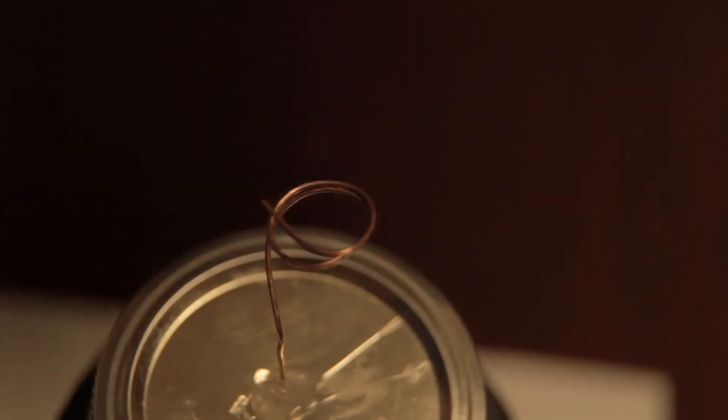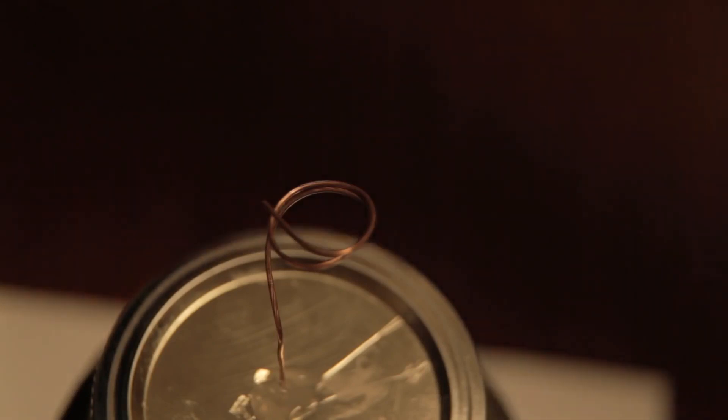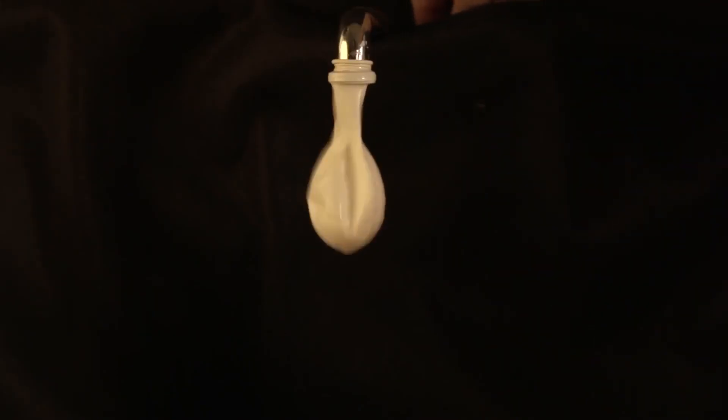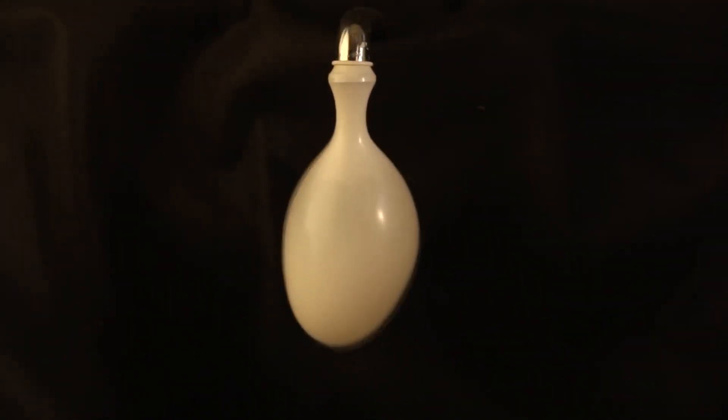Each spark would amplify the charge separation or electrical tension inside the jar. A good analogy is to think of the jar as a balloon, and each discharge as a short jolt of water. And after hundreds of iterations, the tension becomes massive.